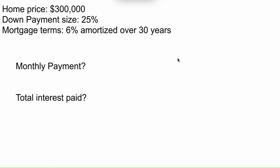In this problem, we're given that the home price we're buying is $300,000. The size of our down payment is 25%, so we're not borrowing the entire amount, just a sizable portion of it. The terms of our mortgage are a 6% rate, amortized over 30 years. The two questions are: what is our monthly payment, and what is the total amount of interest we pay over the course of these 30 years?